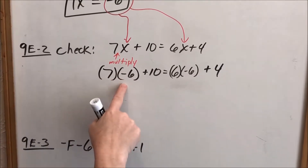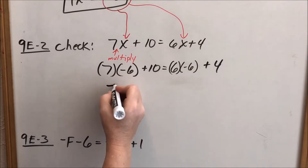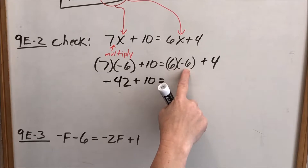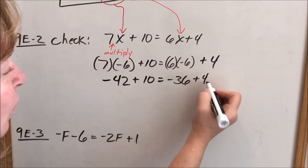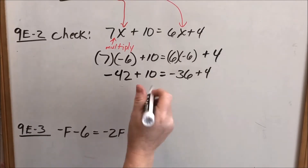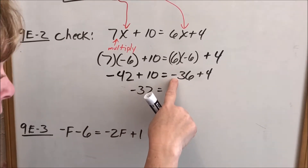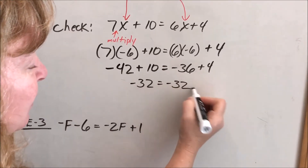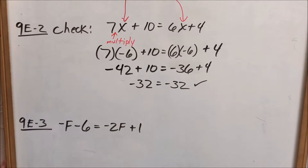We have to do multiplication first. 7 times negative 6 — a positive times a negative is a negative — 7 times 6 is 42, so negative 42. Plus 10 equals positive 6 times negative 6 — a positive times a negative is a negative — 6 times 6 is 36, so negative 36, plus 4. I'm in debt 42 and someone gives me 10, so I still owe 32. I owe 36 and someone gives me 4, I still owe 32 — negative 32. The left side equals the right side, so it checks.